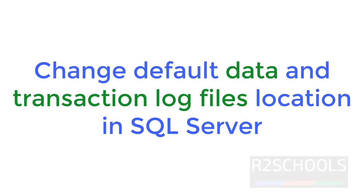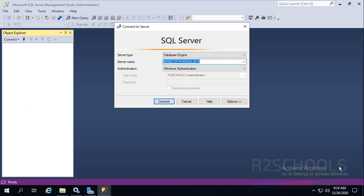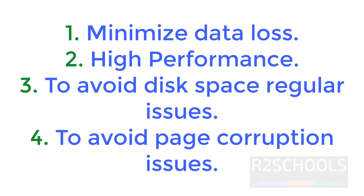Hello guys. In this video I will show you how to change the default data and transaction files location in SQL Server. By default, database files are stored in the data directory. It is always recommended to place data and transaction files in different locations than the default. We need to change the default data and transaction log files location to minimize data loss, for high performance, to avoid disk space issues, and to avoid page corruption issues.